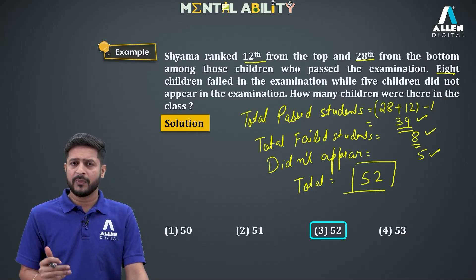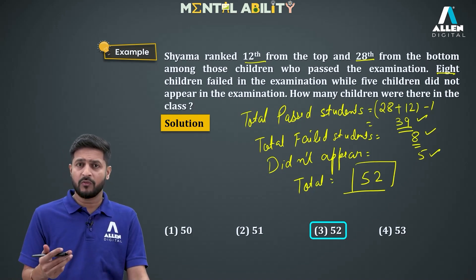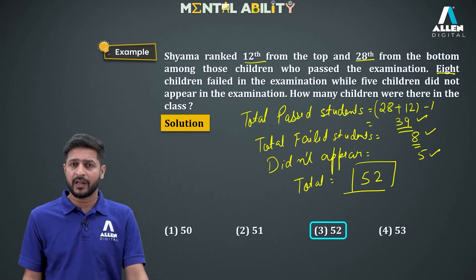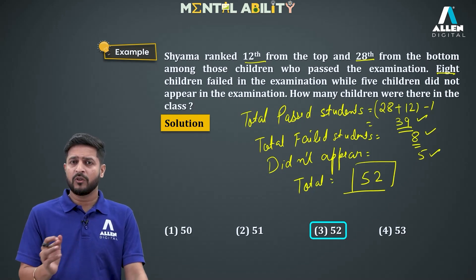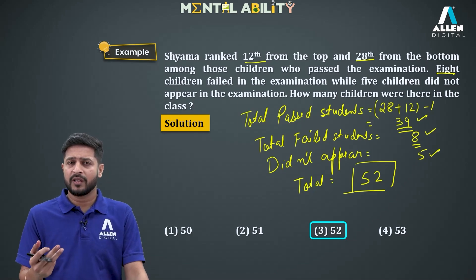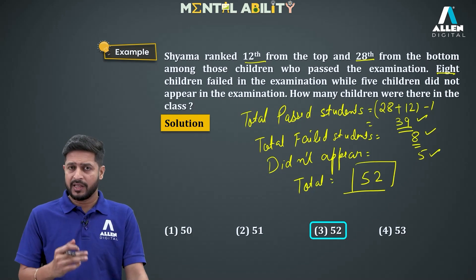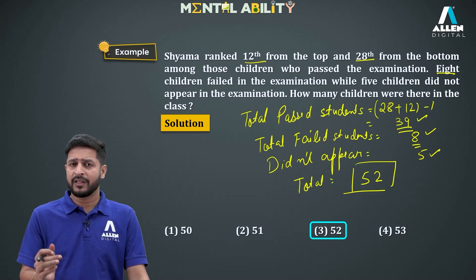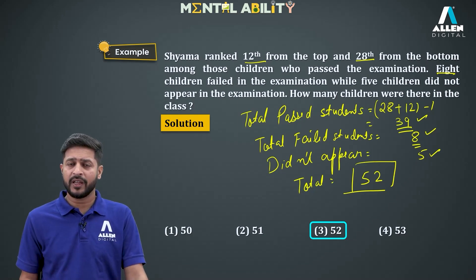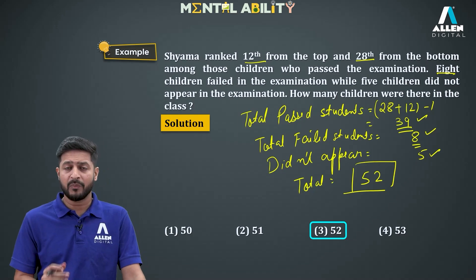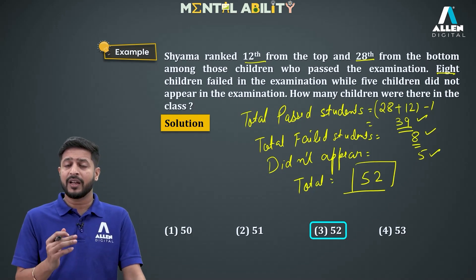In summary, the key concept of the ranking test is the formula: Total = Left + Right − 1, and we subtract 1 because the person in question is counted twice. In some questions, drawing a diagram helps find the answer easily. This concept is very important as many questions have been asked from it in previous years.